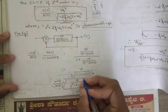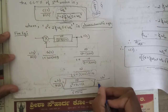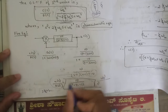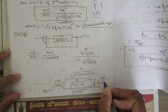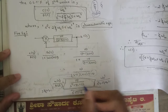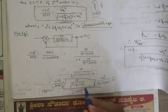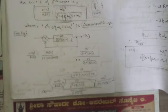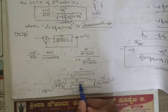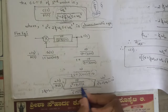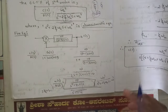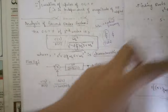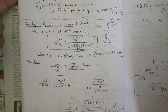In this example, comparing with the general equation ωn²/(s² + 2ζωns + ωn²), we see that ωn² = 12 and 2ζωn = 3. Note that the numerator value 10 and ωn² = 12 are not equal — during calculation we consider only the characteristic equation to find ωn and ζ, not the numerator part.